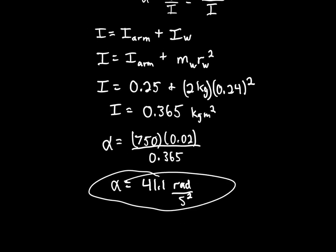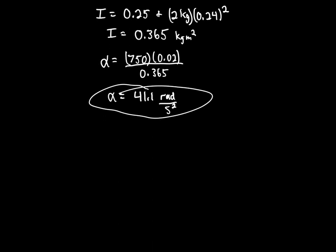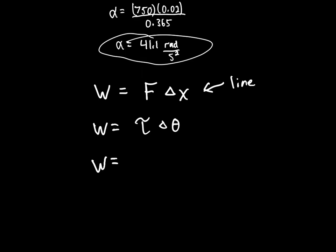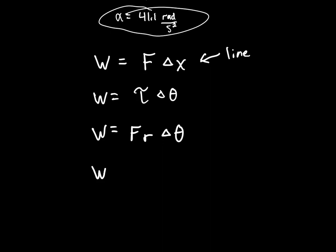For Part B, how much work is done? In linear physics, work equals force times change in position. But here we're rotating, so we use the rotational equivalent: work equals torque times change in theta. Torque is force times lever arm, and change in theta must be in SI units — radians, not degrees.